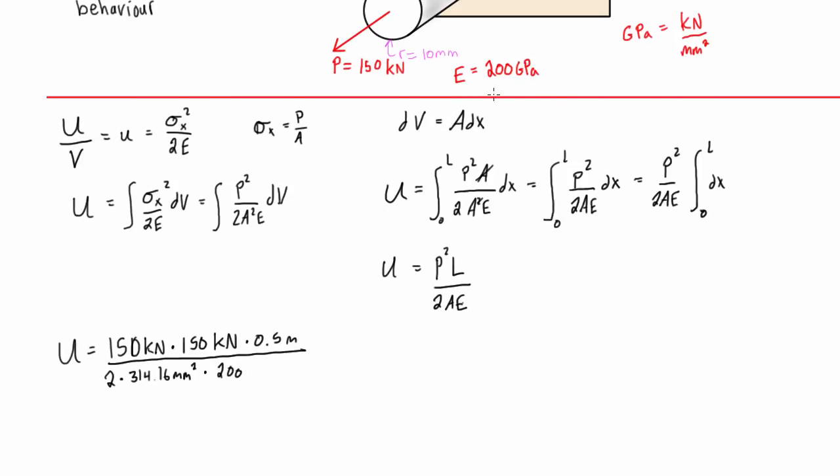E modulus of elasticity, we have 200 gigapascals. Well, we can write gigapascals as kilonewtons per meter squared, if you remember that, or sorry, kilonewtons per millimeter squared, that's the same thing as gigapascals.